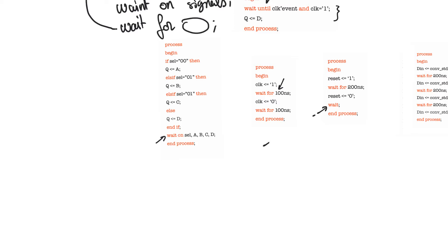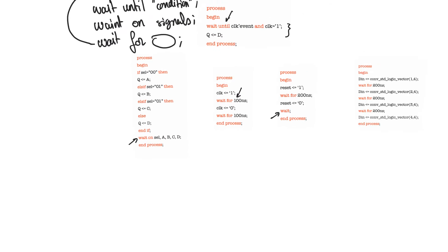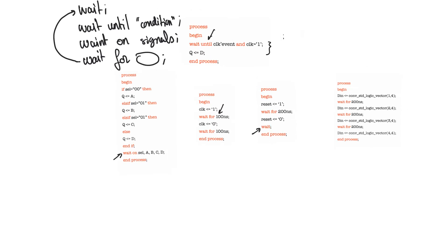When we use a process, we can either use a process with a sensitivity list or a process that contains wait statements. We cannot use a sensitivity list in a process with a wait statement, and we cannot use wait statements in a process that contains a sensitivity list — they are mutually exclusive. Nothing that a sensitivity list can do cannot be done with a wait statement, so a sensitivity list is just an easier way to write a wait statement.